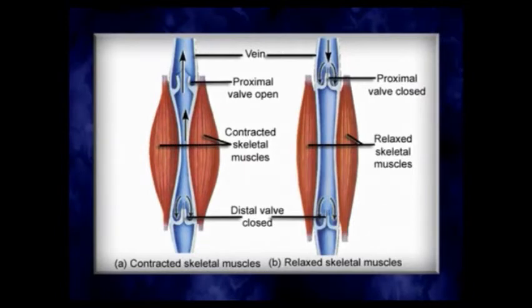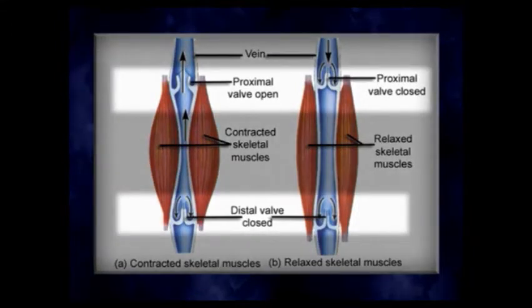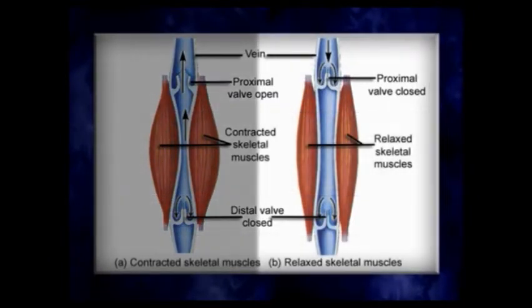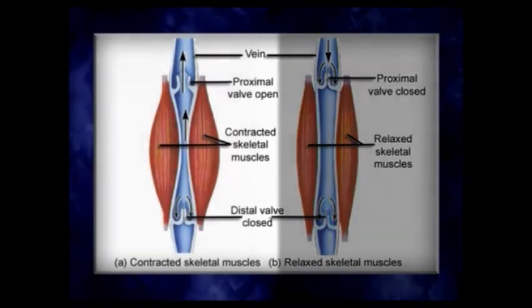Below the heart, the veins have valves which prevent backflow. As we massage our veins with our muscles, they can push flow back to the heart without gravity destroying the effect. In the calf, for example, when muscles are relaxed, gravity would pull blood back down toward the feet — the valves close and prevent any retrograde flow. When the muscles contract, they squeeze the blood upward back toward the heart.